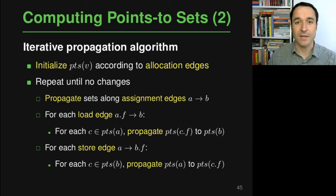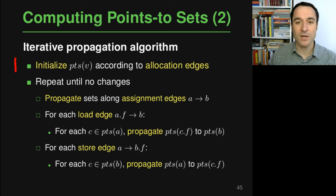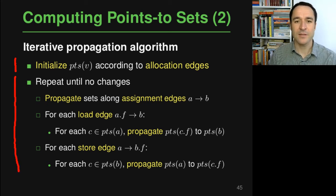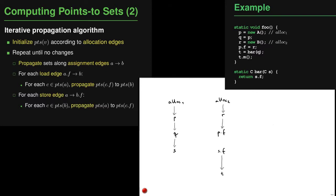Given this helper node and the pointer assignment graph, we can now compute the points-to set for every variable and field using the following algorithm. The algorithm consists of two steps: first, initialize some points-to sets by looking at allocation edges; then run a main loop that repeatedly updates the points-to sets based on different edges in the graph until nothing changes anymore — essentially until all points-to sets have stabilized.